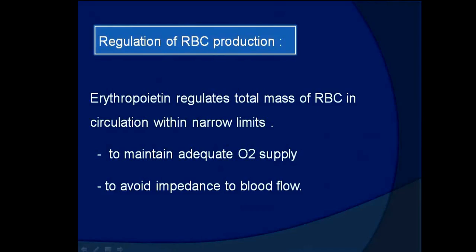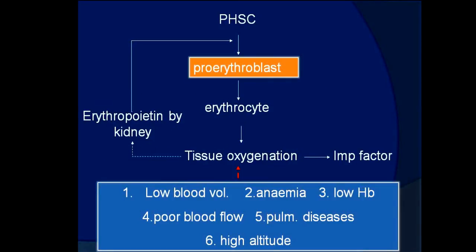Erythropoietin regulates the total mass of RBCs in circulation within narrow limits to maintain adequate oxygen supply and avoid impedance of blood flow. Conditions such as low blood volume, anemia, low hemoglobin, poor blood flow, pulmonary diseases, or high altitude lead to reduced tissue oxygenation, which stimulates erythropoietin secretion by the kidneys.